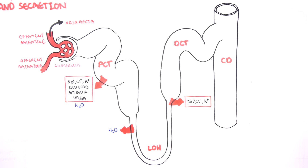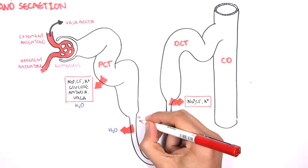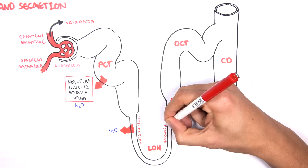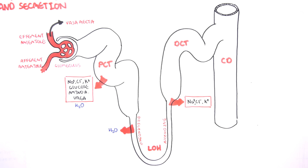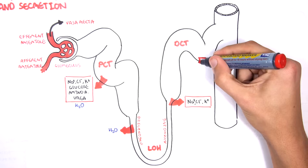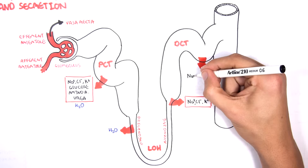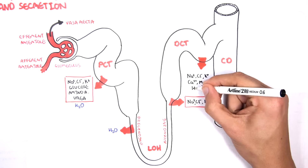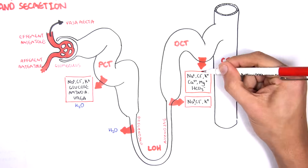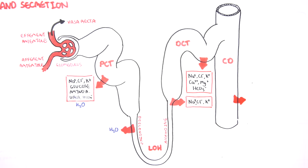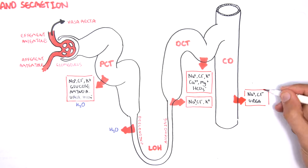The loop of Henle has a descending limb and an ascending limb as we discussed. The distal convoluted tubules are responsible for the reabsorption of sodium, chloride, potassium, calcium, magnesium, and bicarbonate. The collecting duct is responsible for the reabsorption of sodium, chloride, urea, and water.